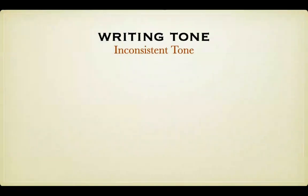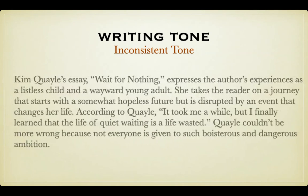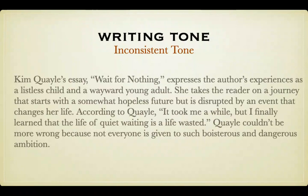Writing that is inconsistent in tone can come across as awkward. Think about the tone of the following example. Kim Quayle's essay, 'Wait for Nothing,' expresses the author's experience as a listless child and a wayward young adult. She takes the reader on a journey that starts with a somewhat hopeless future but is disrupted by an event that changes her life. According to Quayle, 'It took me a while, but I finally learned that the life of quiet waiting is a life wasted.' Quayle couldn't be more wrong because not everyone is given to such boisterous and dangerous ambition. The overall tone of this paragraph could be described as neutral; however, the last sentence includes words and details that are quite negative. This passage sounds awkward because the last sentence doesn't match the tone used throughout the rest of the paragraph.